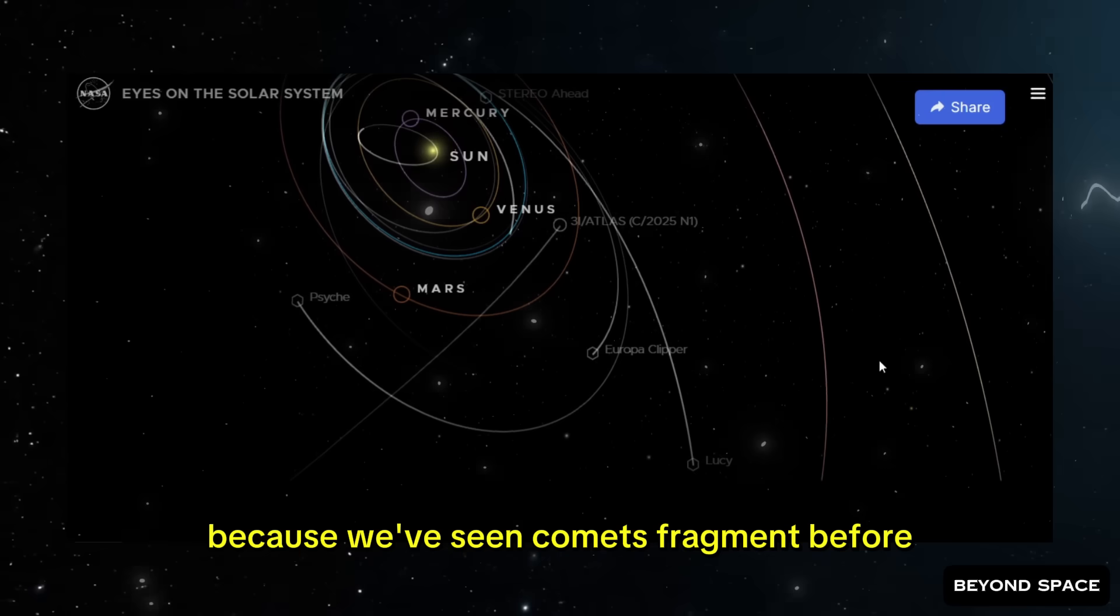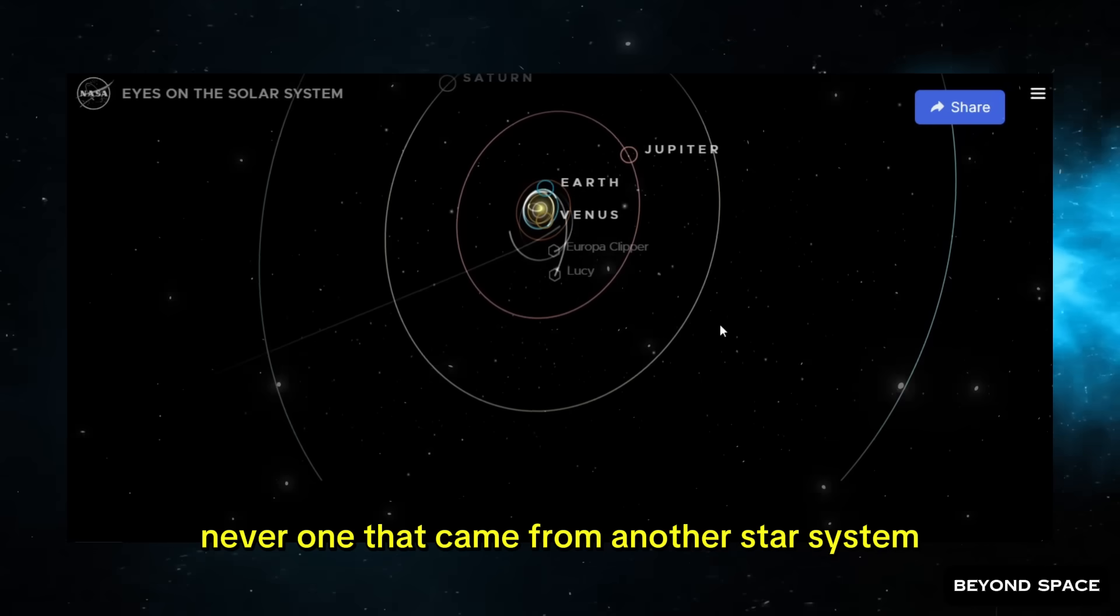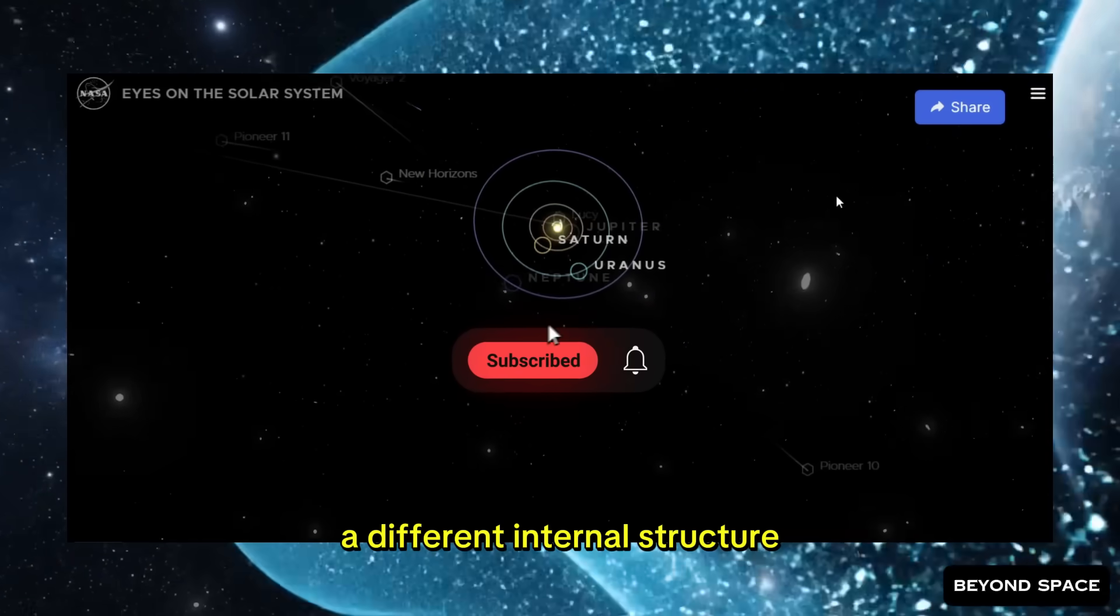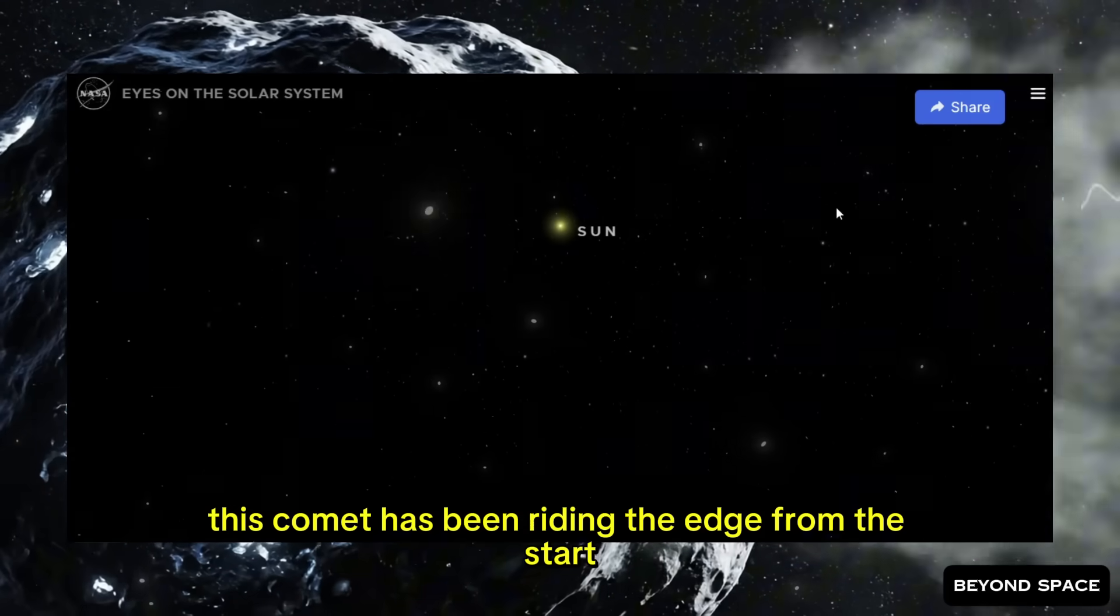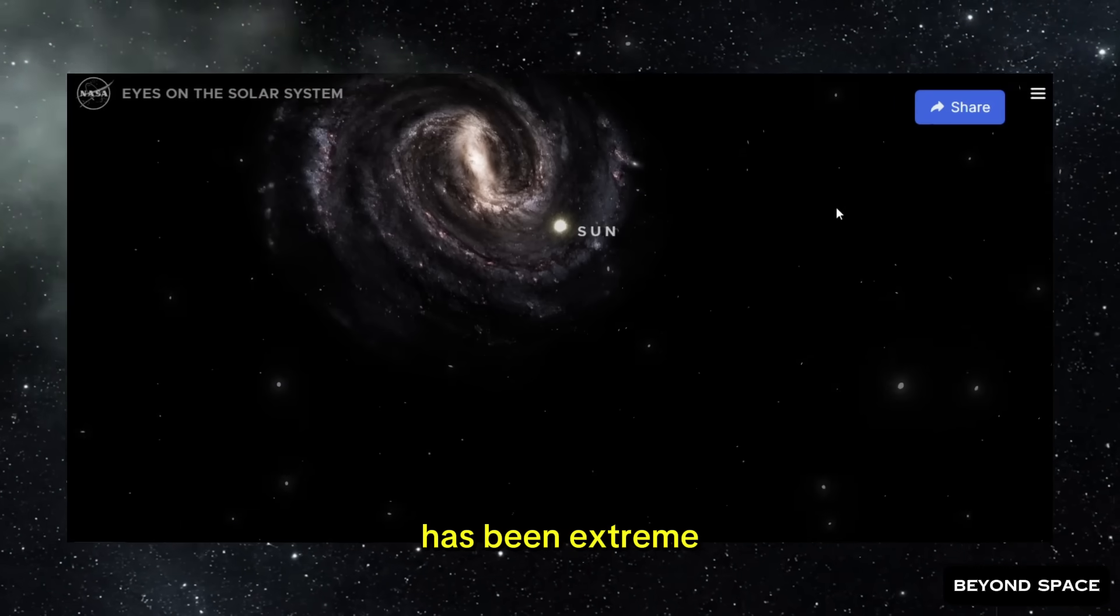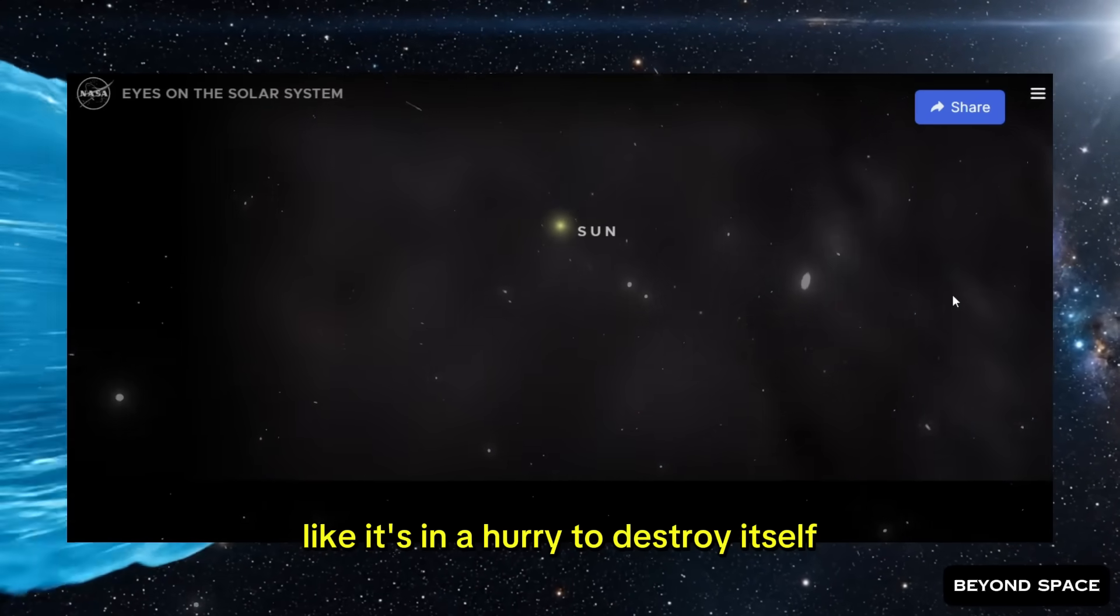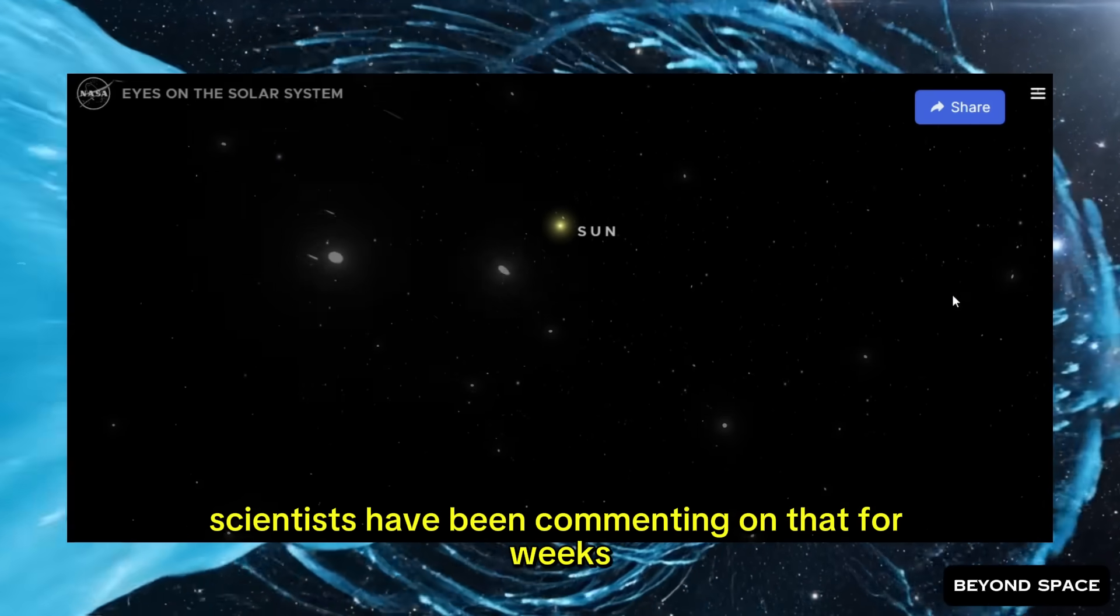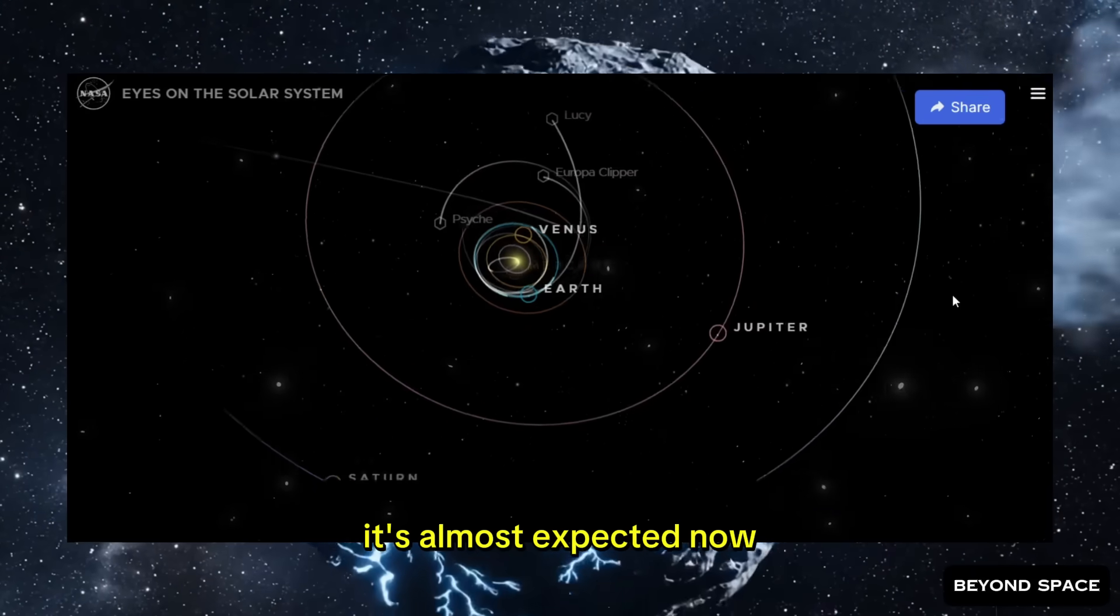That would be huge, because we've seen comets fragment before, but never an interstellar one. Never one that came from another star system, potentially with a different composition, a different internal structure, a different history. And remember, this comet has been riding the edge from the start. The rate at which it's been losing mass, throwing off gas and dust, has been extreme. Way higher than what its size should allow. It's been burning through its reserves like it's in a hurry to destroy itself. If it's been that unstable, that active, then fragmentation isn't just possible. It's almost expected.